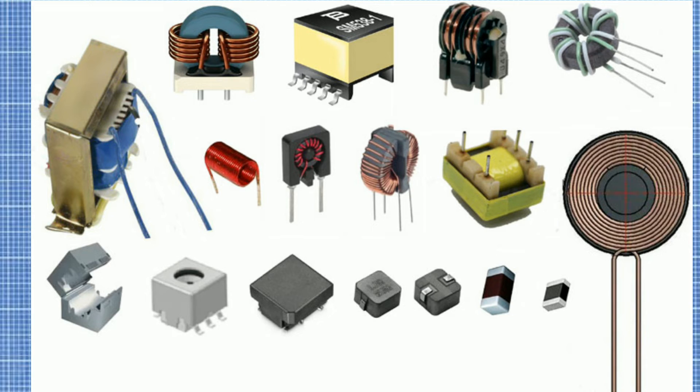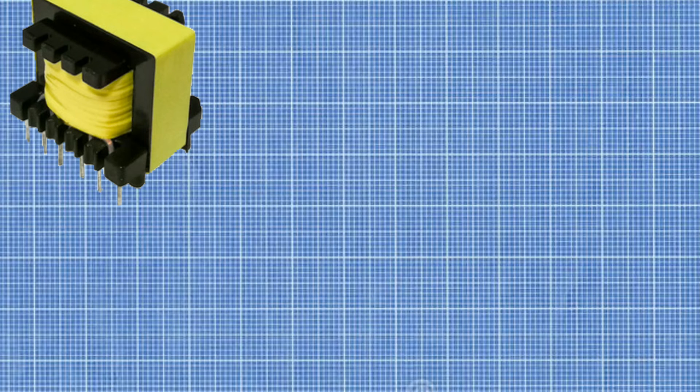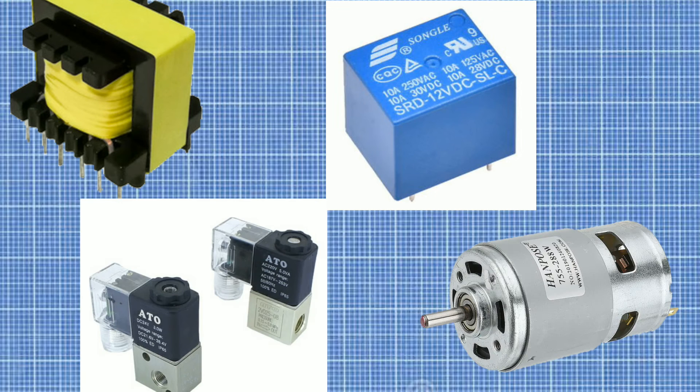Now look at this component. These all are one type of inductor. Something to remember is that everything with coiled wire acts as an inductor. For example, transformers, relay, solenoids, motors, etc.